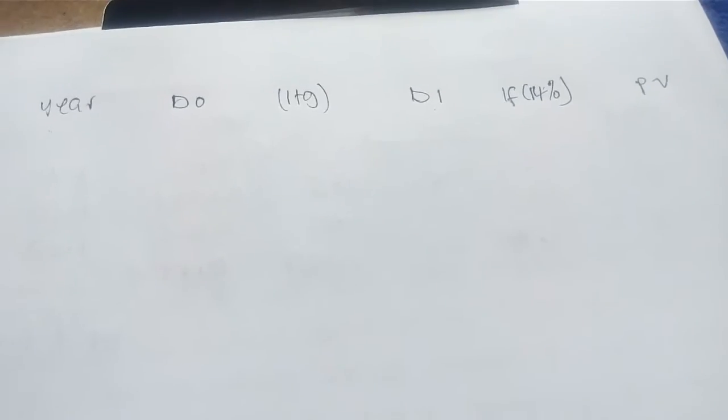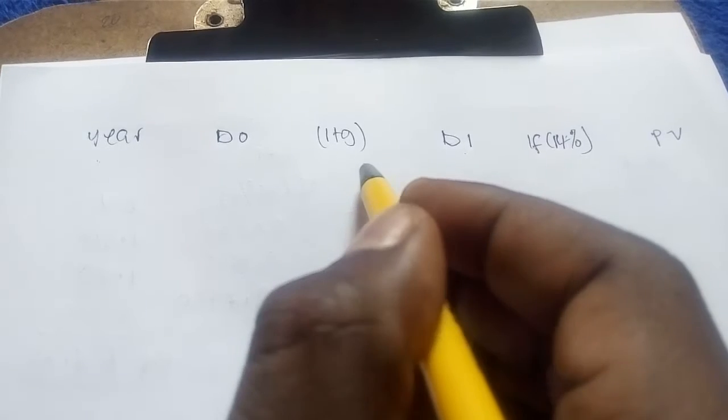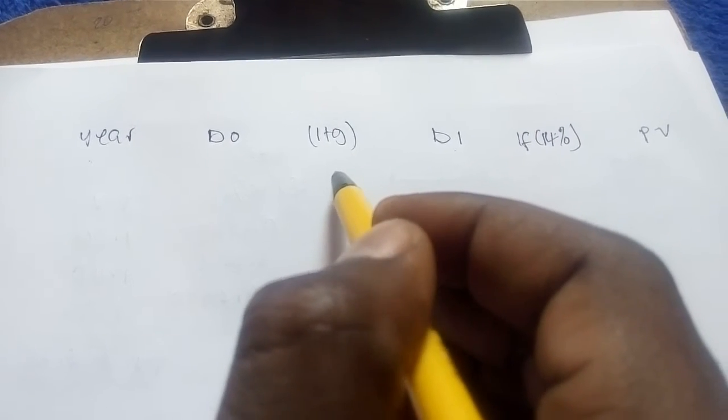We set up a table with columns for: year, current dividend, the rapid growth factor, expected dividend, the interest factor at the cost of capital (14 percent), and the present value of dividends. Multiplying the current dividend by the growth factor gives the expected dividend, and multiplying the expected dividend by the interest factor gives the present value.